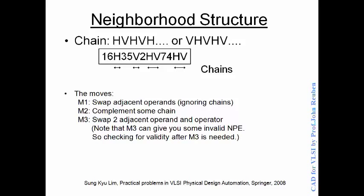The second move is complementing some chain — a chain meaning a sequence of operators. So H is a chain with one operator; H, V is a chain with two operators. When you complement, H can be made V or V can be made H. When you complement H, V it becomes V, H. The third move is swapping an adjacent operand and an operator — for example swapping 5 and V, giving 1, 6, H, 3, V, 5 instead of 5, V. You must be careful with the third move: while moves M1 and M2 preserve normalization, the third move may produce an un-normalized expression, so you must check after applying it.